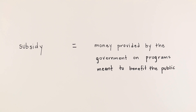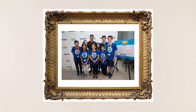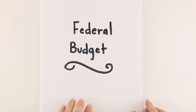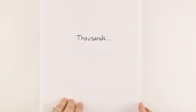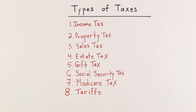Another type of transfer payment is called a subsidy. Subsidies are money provided by the government for programs meant to benefit the public. For example, Boys and Girls Clubs of America are programs that provide quality after-school activities for children in the United States, and they are partially funded by the federal government. The complete federal budget is hundreds of pages long and is made up of thousands of these two types of expenditures. Because of the many types of taxes the federal government collects, they are able to provide these services.